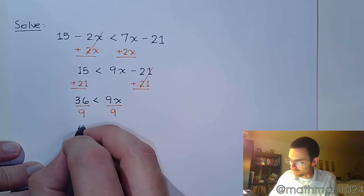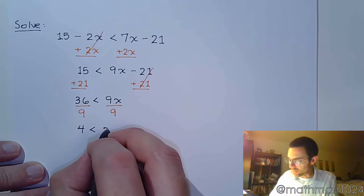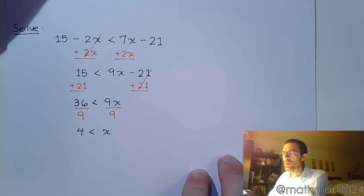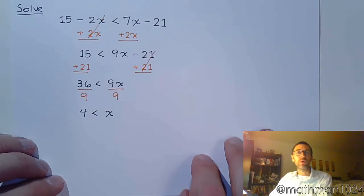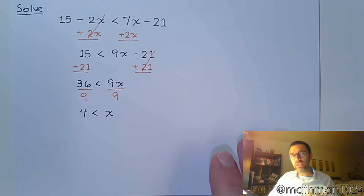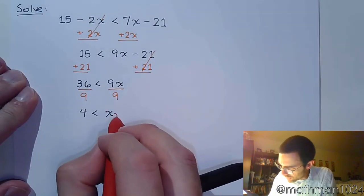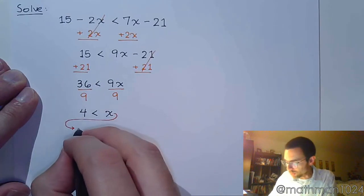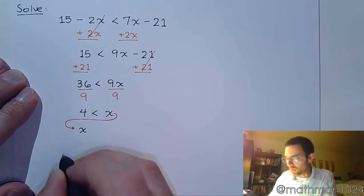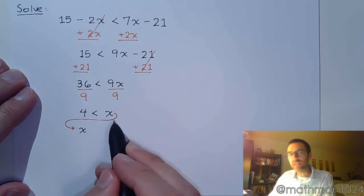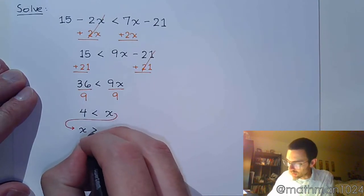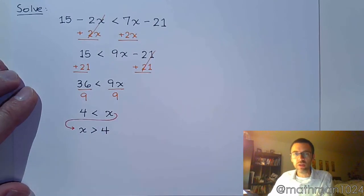Your final step is to get this x by itself, and we divide both sides by 9. On the left side, we have 4 is less than x. Now, writing it like this can cause us problems, just in terms of the orientation and how we read things. Typically when we're trying to solve an inequality, we read it from a different direction. We tend to read this from the perspective of x. This says that 4 is less than x, but going backwards, that means that x is greater than 4.